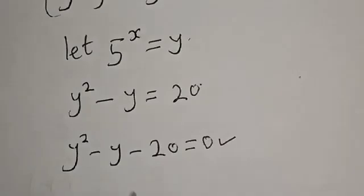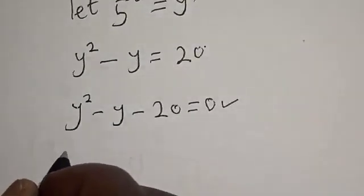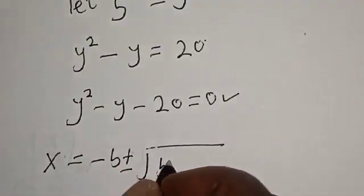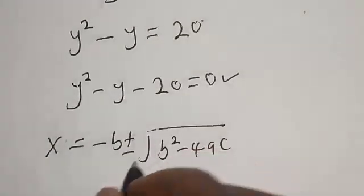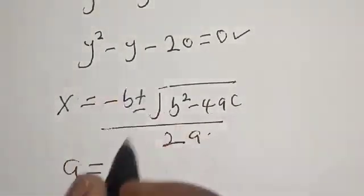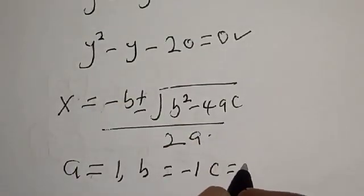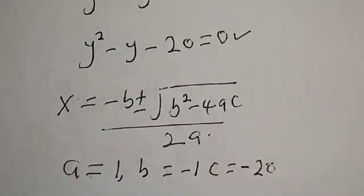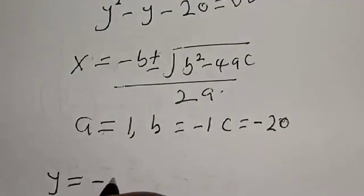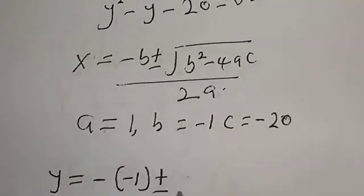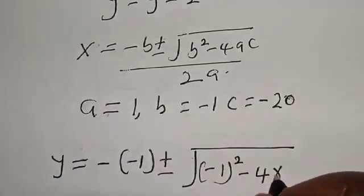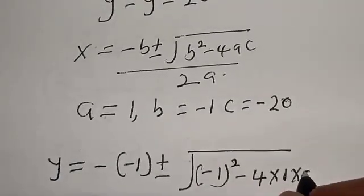This is a quadratic equation which can be solved using the quadratic formula: x equals negative b plus or minus square root of b squared minus 4ac, all over 2a. From this equation, a equals 1, b equals negative 1, and c equals negative 20.